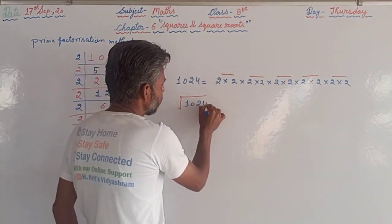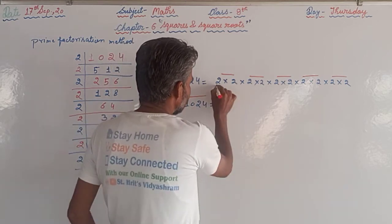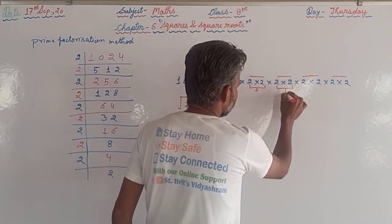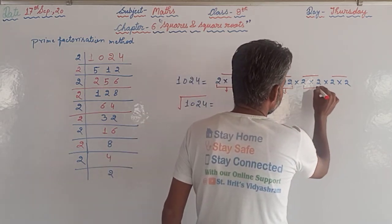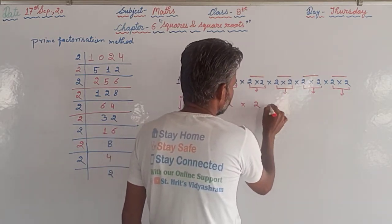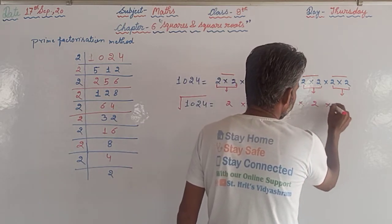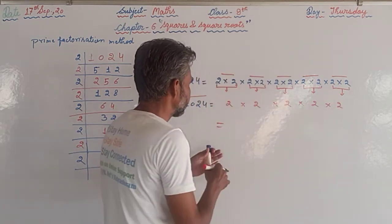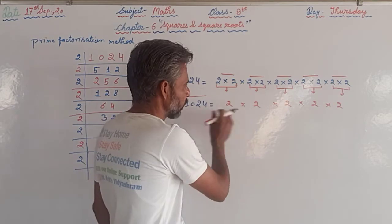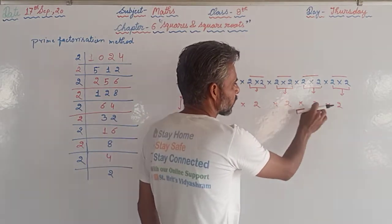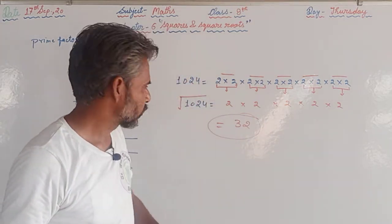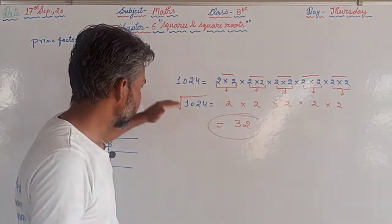To find the square root, we take one number from each pair. We take one 2 from each of the five pairs, giving us 2, 2, 2, 2, and 2. Multiplying these: 2×2=4, 4×2=8, 8×2=16, 16×2=32. So 32 is the square root of 1024.